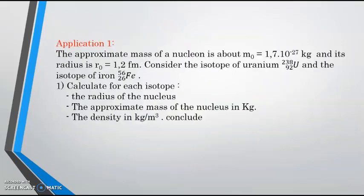So we start with the application, with application 1. Here you can see in the first session, given approximate mass of nucleus M0 equal 1.7 times 10 to the power minus 27 kg, and given the radius of one nucleus R0 equal 1.2 fm. We only consider the isotope of uranium and the isotope of iron. In part 1, calculate for each isotope the radius of the nucleus, the approximate mass of the nucleus in kg, and the density in kg per m³.